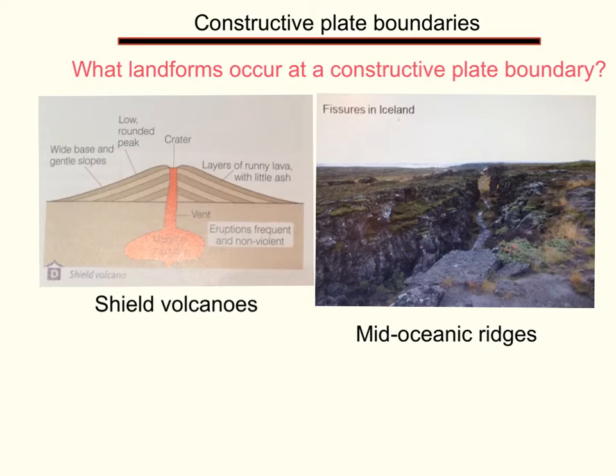A shield volcano, as you can see from the diagram here, has layers of runny lava with very little ash. It has a low rounded peak. It's not very high, and it's like a shield, hence the name shield. It has a very wide base with the sides being very gentle.